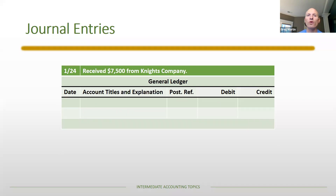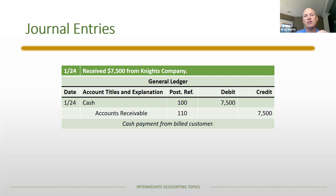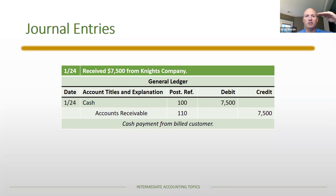Collected a payment from Knight's Company for seven thousand five hundred dollars on the prior credit sale. Debit cash seventy-five hundred, credit accounts receivable seventy-five hundred. The total asset doesn't change — we're just exchanging one asset for a different asset. We already recorded the revenue when the sale was made, so there's no additional revenue from the collection.